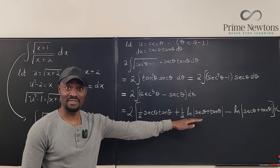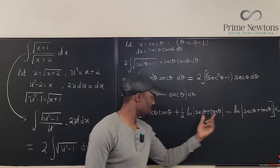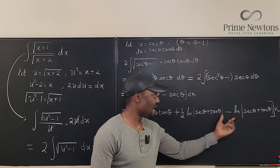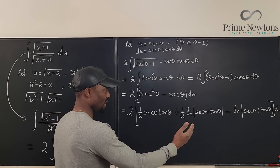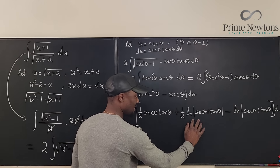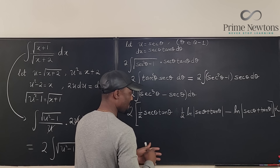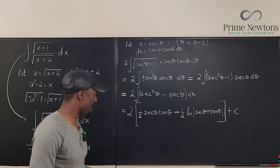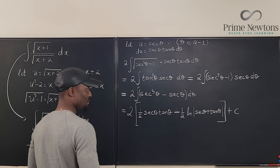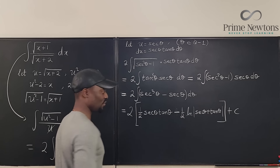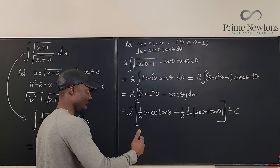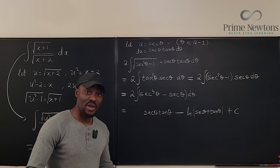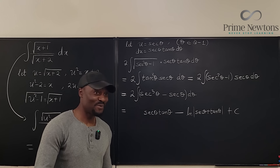This natural log term and that natural log term are the same. One-half minus one gives negative one-half of the natural log. When we multiply everything by the factor of 2 out front, the one-half on the secant tan term disappears and the negative one-half becomes negative one. So we end up with secant theta tan theta minus the natural log of the absolute value of secant theta plus tan theta, plus C.